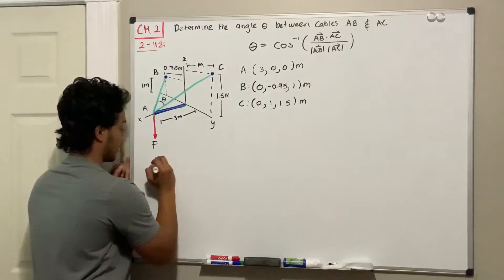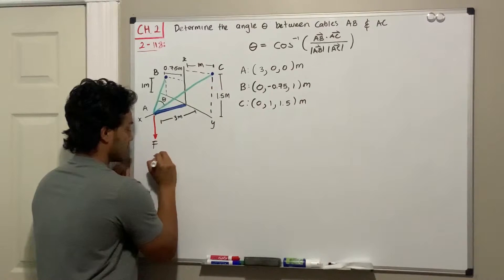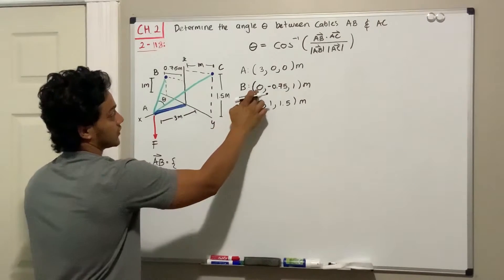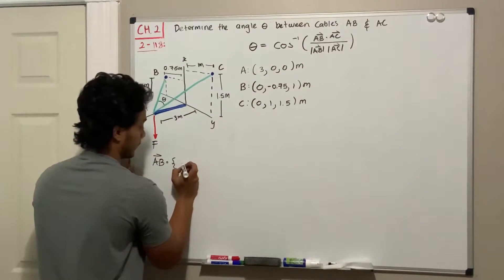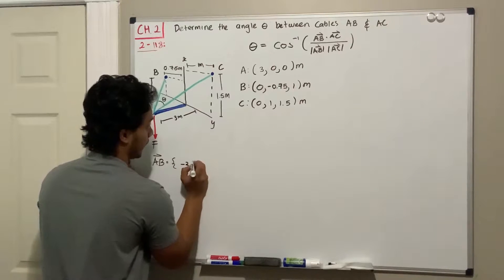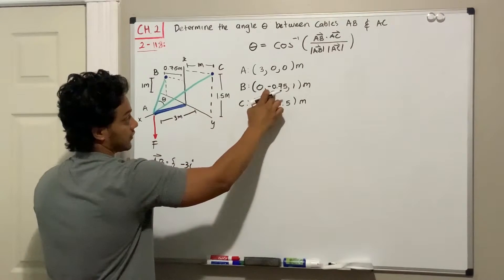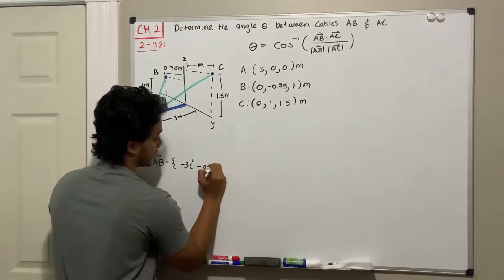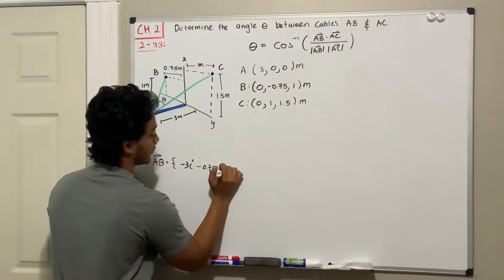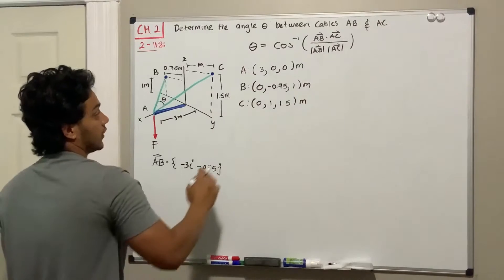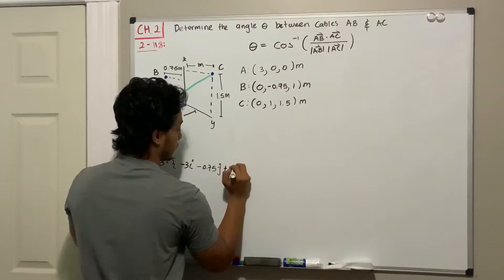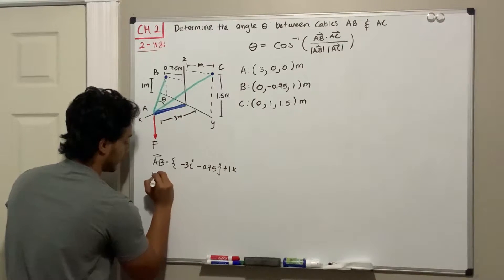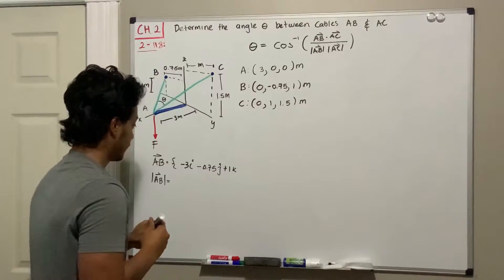start by finding the vector AB. Vector AB is going to be equal to B minus A. So we start: 0 minus 3, that gives negative 3 in the i-direction. Negative 0.75 minus 0 gives negative 0.75 in the j-direction. And 1 minus 0 gives positive 1 in the k-direction. For vector AB, we can find its magnitude by applying the Pythagorean theorem